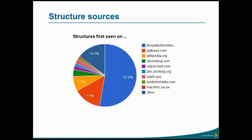Some interesting factoids about the source of these structures: over 60% of the structures came from patent archives like Free Patents Online and PatBase. But we also have an abundance of extra data sources like Wikipedia, ChemDrug, and Zinc.